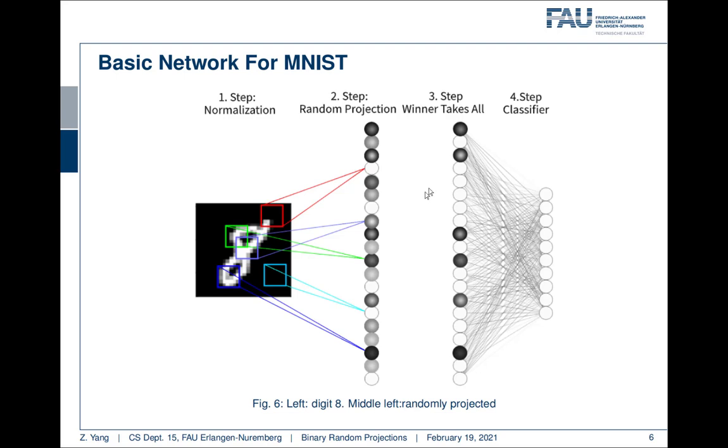We call the percentage of the remaining neurons hash length. For example, if we are having 20% hash length, that means 20% of the most activated neurons remain activating and the other 80% of the neurons are zero.